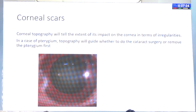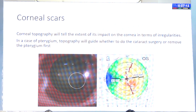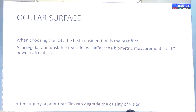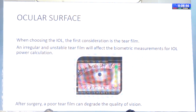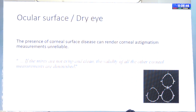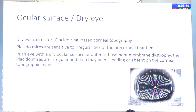Starting with clinical pointers: if there is a scar, it will definitely affect the outcome, and the impact on your calculation will be revealed only by topography. Similarly for a pterygium — whether to remove it before or alongside cataract surgery — the effect on the cornea must be studied with a topography map. For ocular surface, when choosing the IOL, the first consideration is the tear film. An irregular, unstable tear film will affect biometric measurement and IOL power calculation, and poor tear film can also degrade quality of vision post-surgery. If the mires are not crisp and clean, the validity of all other measurements will be diminished.